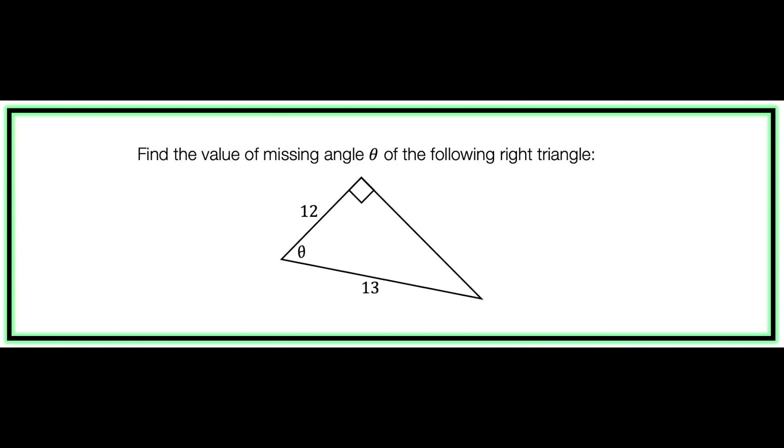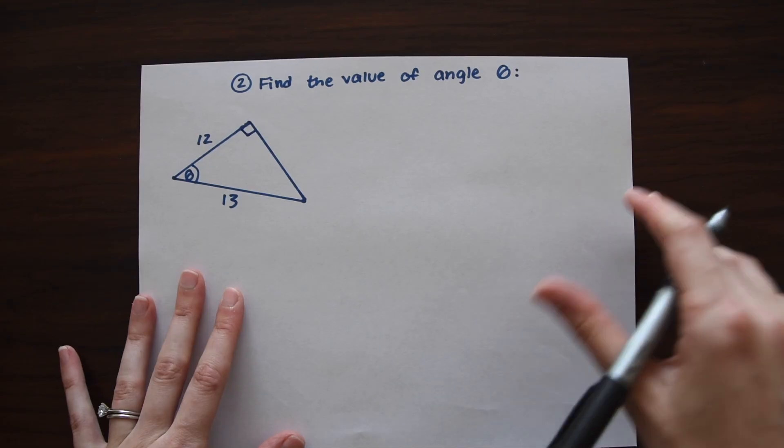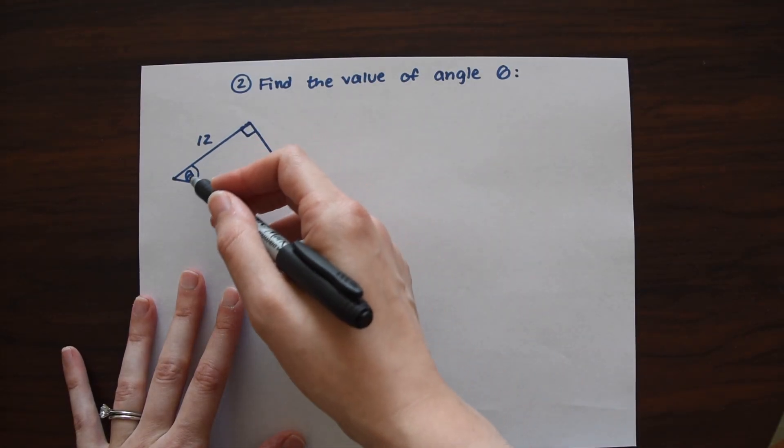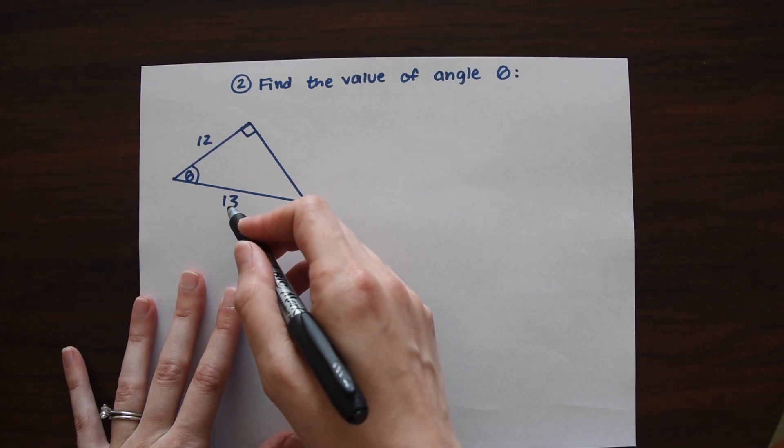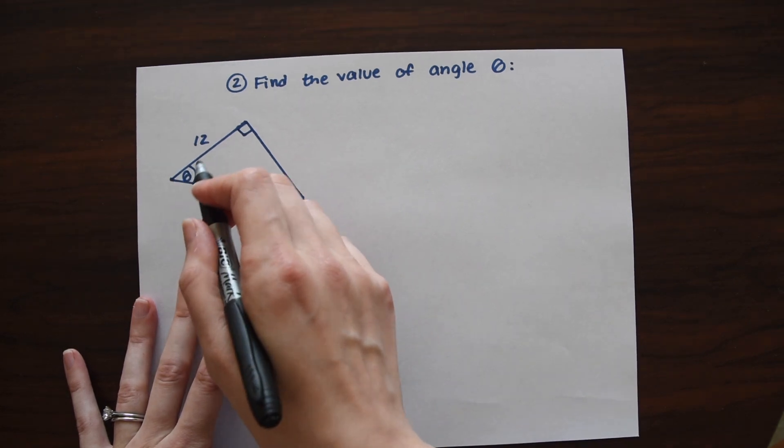For our next question, we want to do something a little different here. They want us to find the value of the missing angle theta. So we have a side length 12 and a side length 13 and a missing angle. And that's what we need to find.